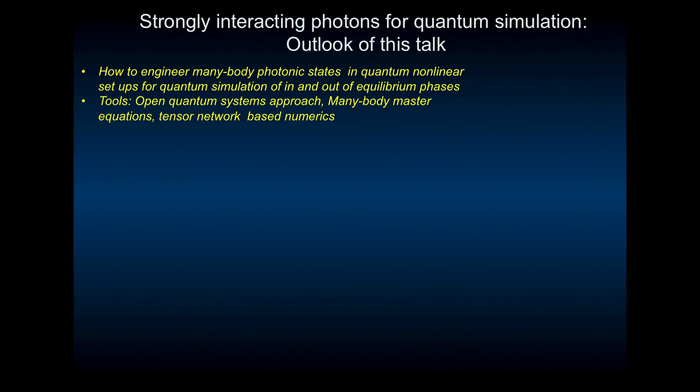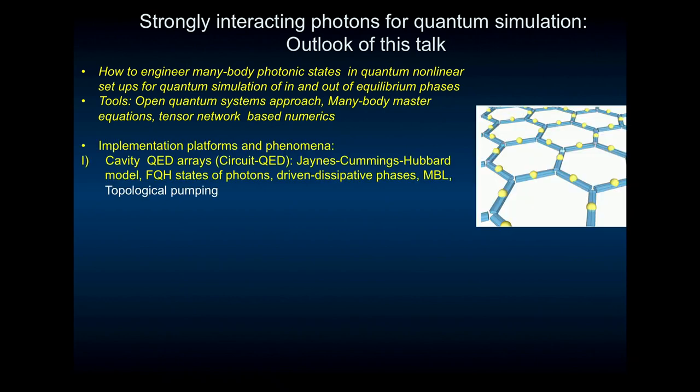An outlook of this talk. I will talk briefly how to engineer many-body photonic states in quantum nonlinear setups for quantum simulation of in and out of equilibrium phases. I will briefly mention the tool we use in this field, in this trade. It's open quantum systems approach, master equations, many-body master equations, lots of numerics, especially in 1D types of network numerics. Then I will briefly mention the James Cummings Hubbard model, as is known now, or the James Cummings lattice model, which is kind of generated under this cavity QED arrays. I will mention what the fractional quantum hole states of photons, and I will mostly talk about this recent MBL stuff, many-body localization.